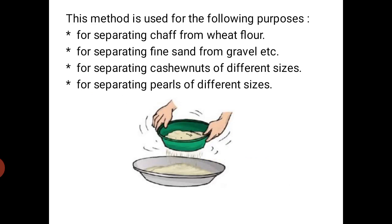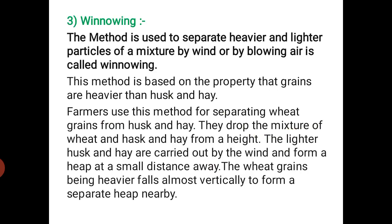Sieving is used for the following purposes: separating chaff from wheat flour, separating fine sand from gravels, separating cashew nuts of different sizes, and separating peas of different sizes. The diagram shows how the sieve is used to remove unwanted particles.